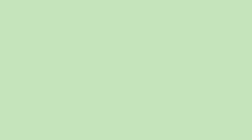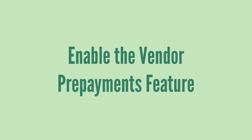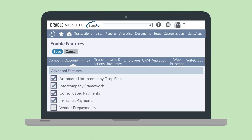Before using the Vendor Prepayments feature, you'll need to enable the feature, set up a vendor prepayment account, and set up the appropriate permissions. You can enable this feature on the Advanced Features section of the Accounting tab in Enable Features. If you ever need to disable this feature once you've used it, you can do that after deleting any vendor prepayment transactions.